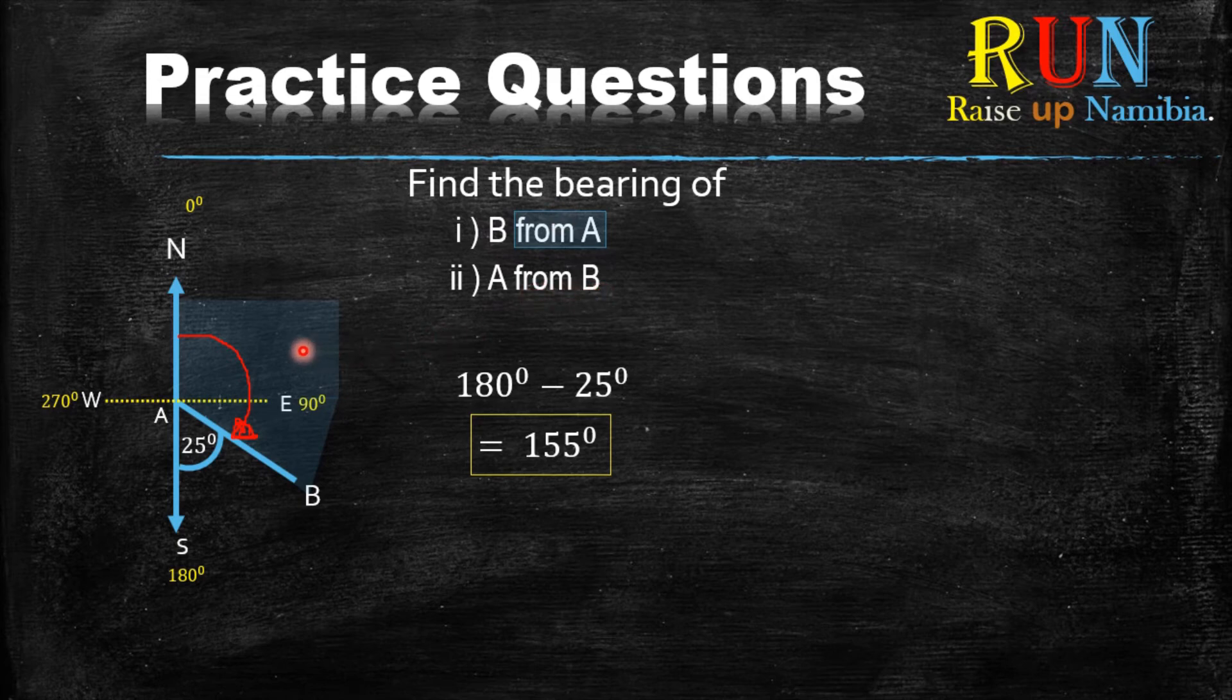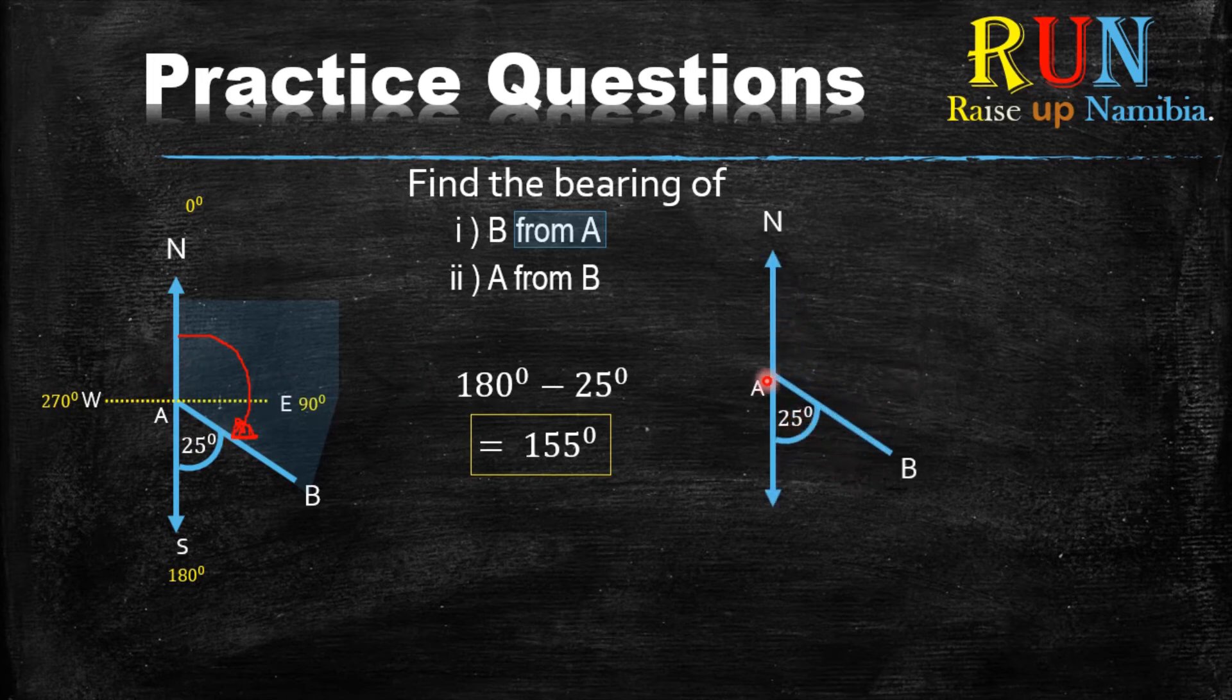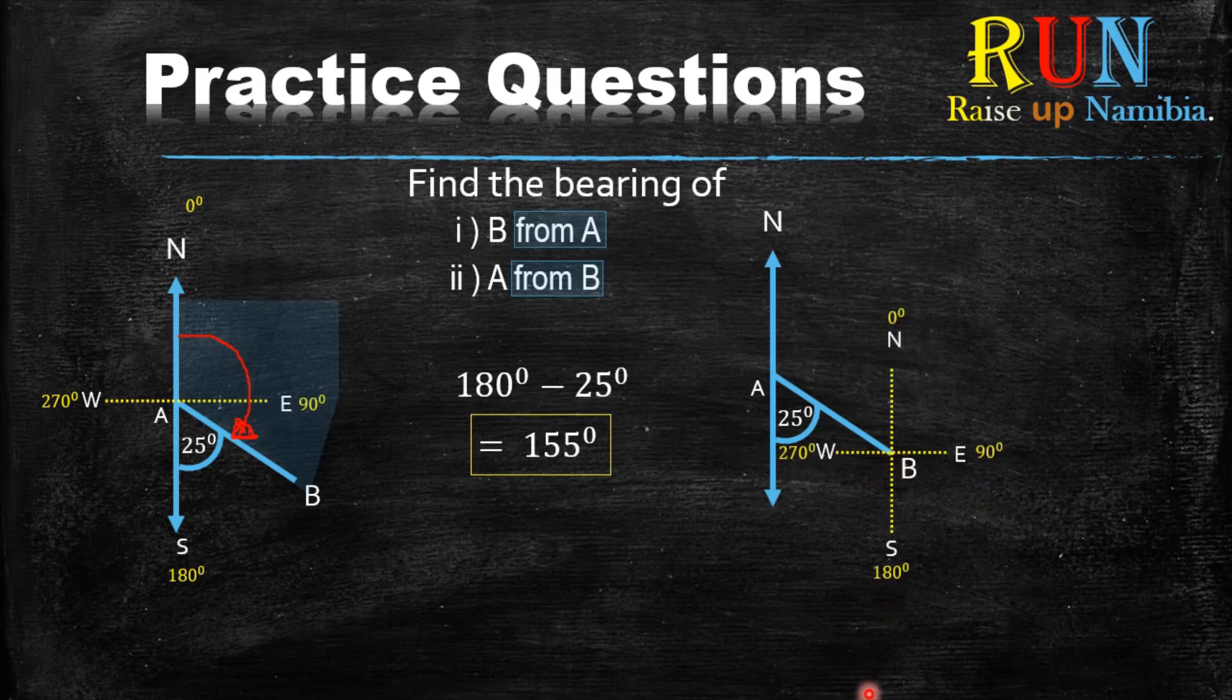So for the second one, it says the bearing of A from B. Let's just take this diagram on the other side because here we have worked on it. So here it's the same diagram, it's just that we haven't worked on this one. Let's re-read the example. Find the bearing of A from B. So it says from B. Now we go to the B. Where is B? B is over here. So what do we do there? We treat the B as the center of our cross. And then we start at the north, which is over here.